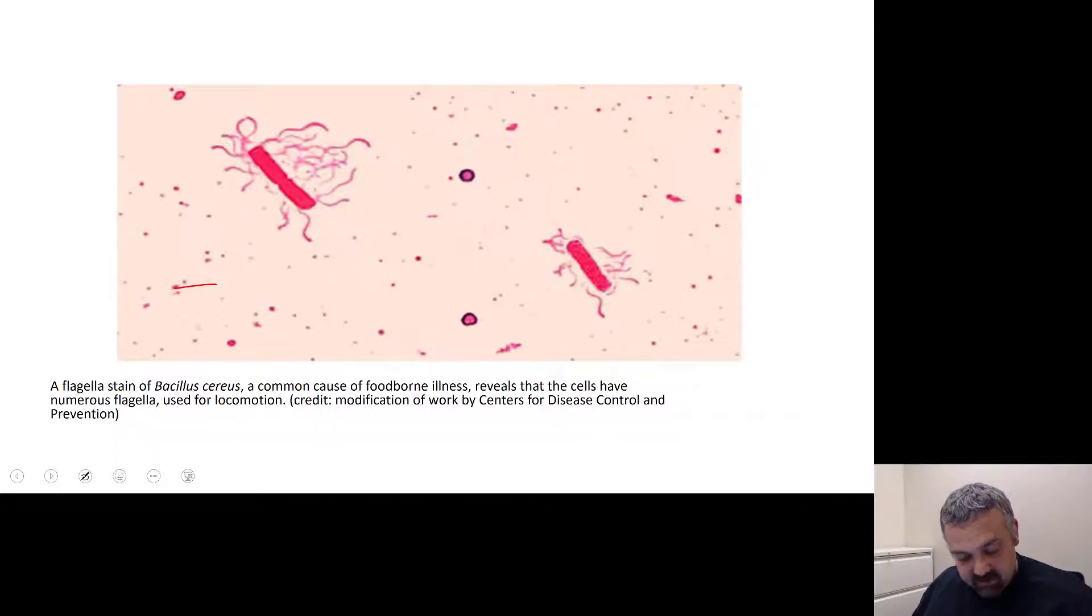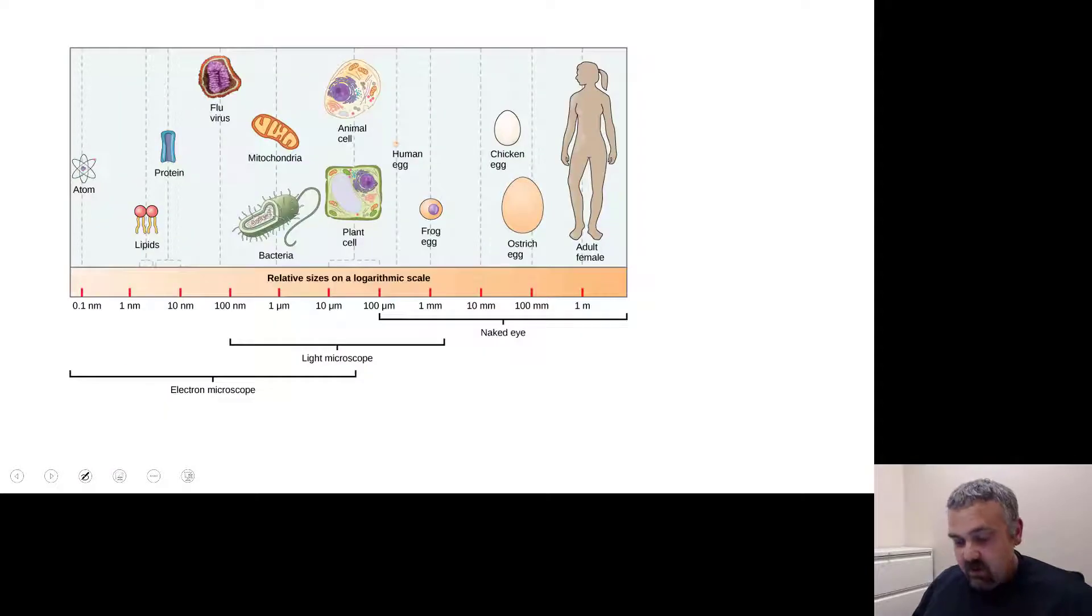Alright, let's see, just erase that quick. So if we're going to look at tiny things, let's talk about size for a second. Microscopes or something that's microscopic is, like the name implies, it can't be seen with the unaided eye, so we need help, and that's what the microscope does.